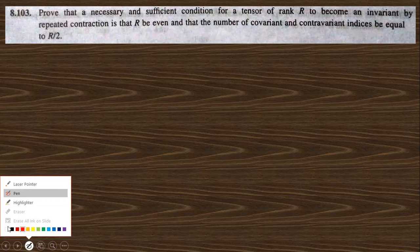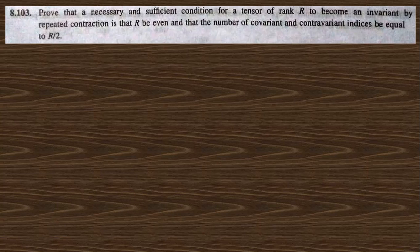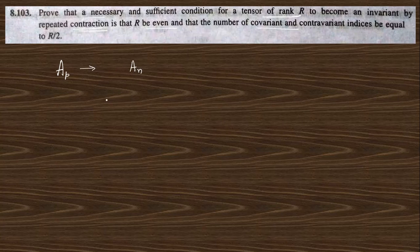Question 8.103 says: prove that a necessary and sufficient condition for a tensor of rank R to become invariant by repeated contraction is that it has an even number of covariant and contravariant indices equal to each other. That means you have any tensor of rank R. This can be invariant — invariant means it will remain like that, it is a scalar quantity, there is no transformation matrix.